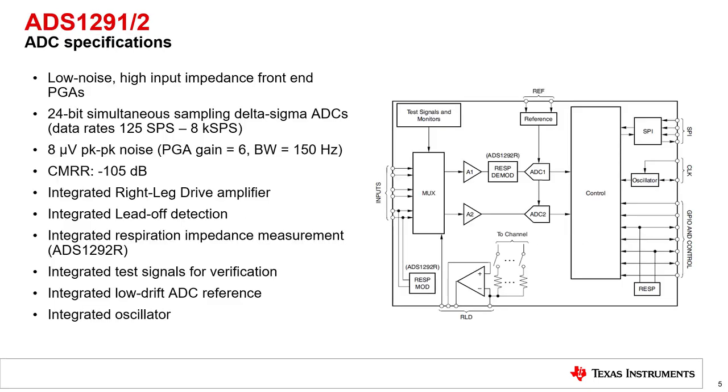The ADS1291 and ADS1292, which are the 1- and 2-channel AFEs, have similar performance specs. These devices have very low noise, high-input impedance front-end PGAs, and 24-bit simultaneous sampling delta-sigma ADCs, which can support data rates from 125 SPS up to 8K SPS.